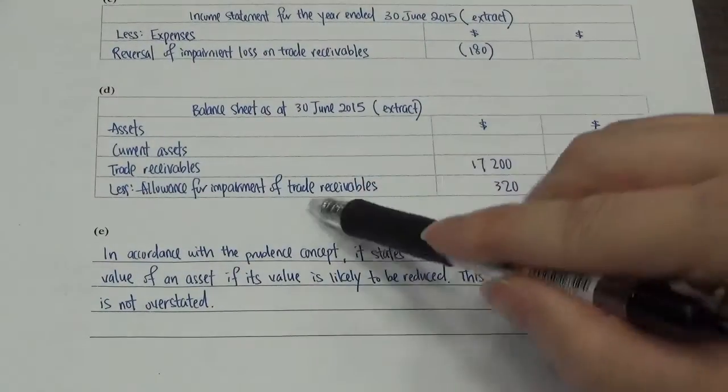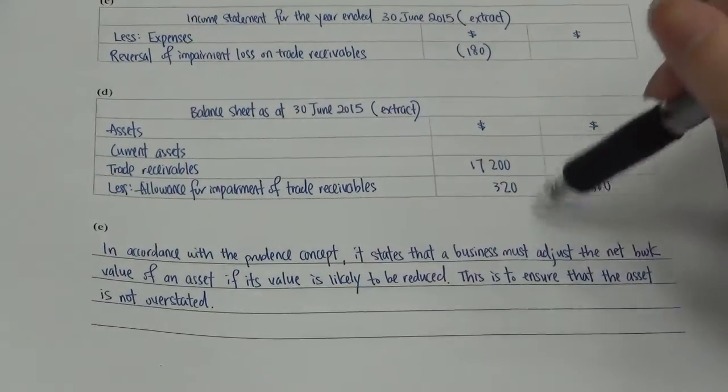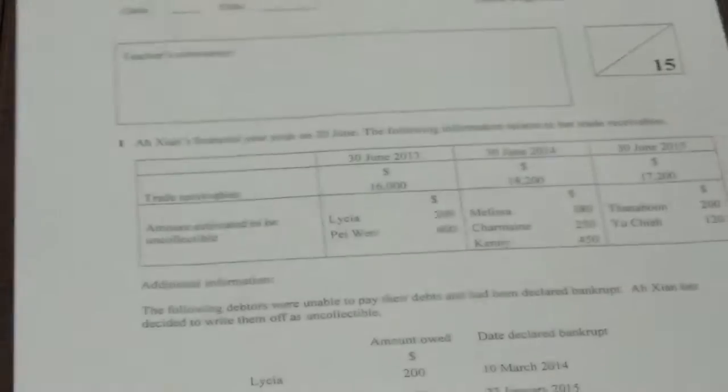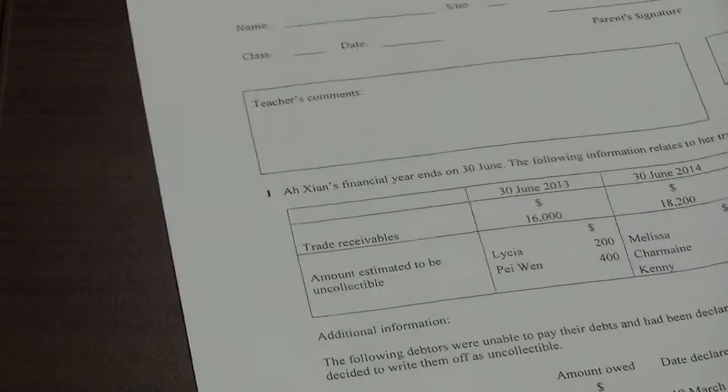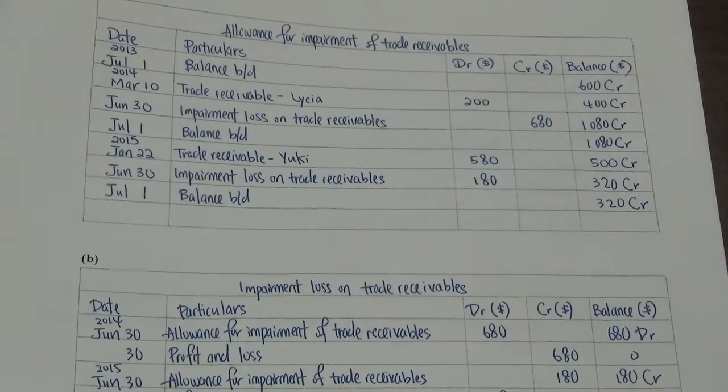Then you, less allowance for impairment of trade receivable. This one take from where? Either you take from here, 320. Or, you take from the account. At the end, 320. Both are fine.